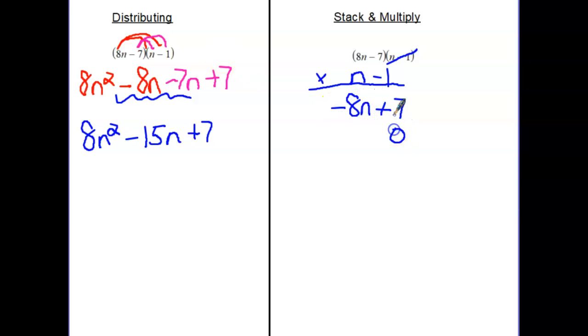I put in a 0. Go to the next guy. n times negative 7, negative 7n. And n times 8n is 8n². Draw a line. And I add straight down. 8n² minus 15n and plus 7. Same answer either way.